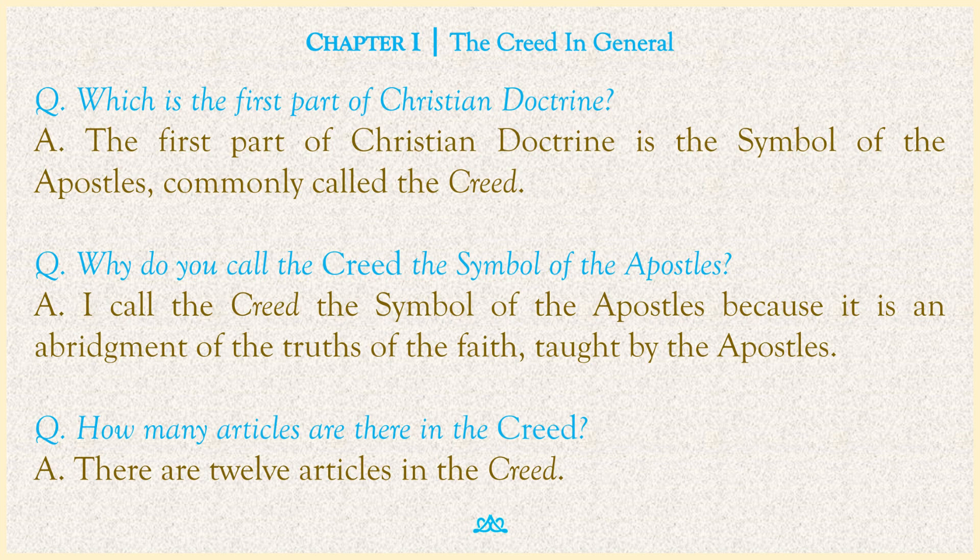Which is the first part of Christian Doctrine? The first part of Christian Doctrine is the Symbol of the Apostles, commonly called the Creed. Why do you call the Creed the Symbol of the Apostles? I call the Creed the Symbol of the Apostles because it is an abridgment of the truths of the faith taught by the Apostles. How many articles are there in the Creed? There are twelve articles in the Creed.